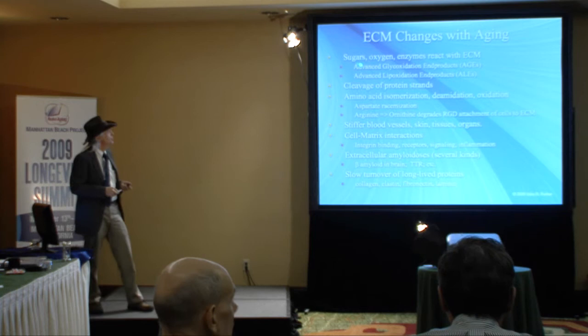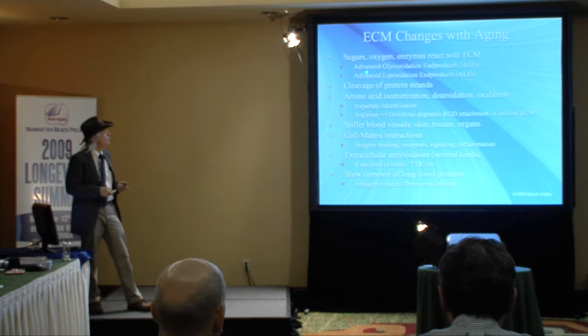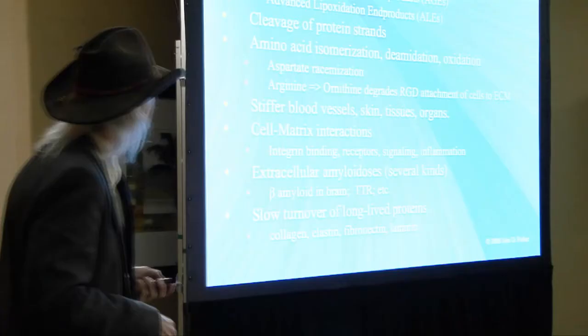The tissue is actually getting harder because of the extracellular matrix. Sugars, oxygen, and enzymes react with the extracellular matrix and form products known by the technical buzzword advanced glycoxidation end products, or advanced glycation end products, abbreviated AGEs. Fats or lipids undergo similar types of reactions and produce ALEs, and some of the ALEs and AGEs are actually the same chemical.